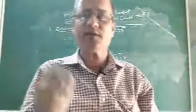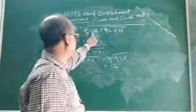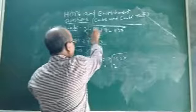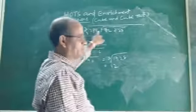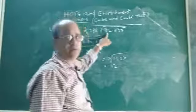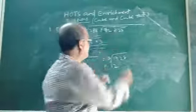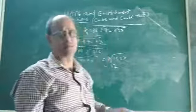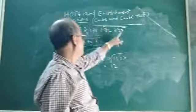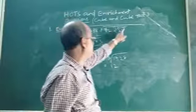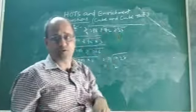In the first question, evaluate cube root of 288, into cube root of 72, into cube root of 27. How to solve this type of question? What is the rule? Here is one cube root, here is one cube root, here is another cube root — there are three cube roots here.